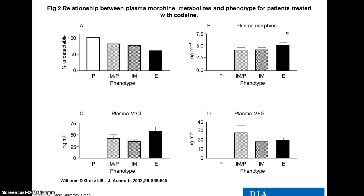Children who received codeine for pain relief were more likely to need rescue analgesia at 2 and 4 hours after the operation than children who received morphine. However, children who received morphine had more vomiting and higher sedation scores than those who received codeine. So codeine may have been perceived as beneficial in young children simply because children are less likely to vomit or be overly sedated — but this may just reflect that codeine is less effective in many people, and its lack of effectiveness may be underestimated.